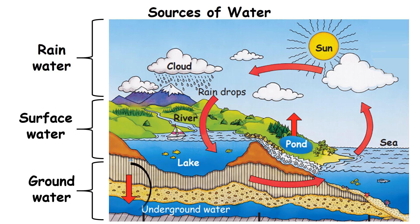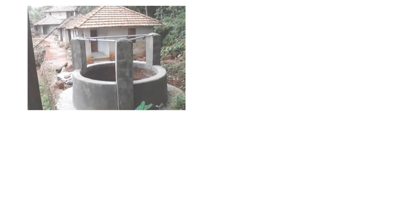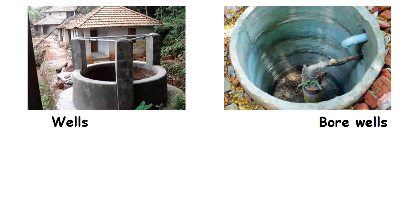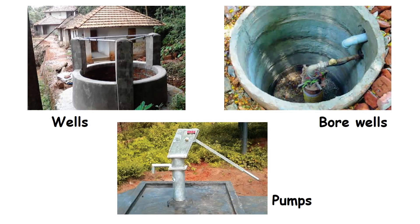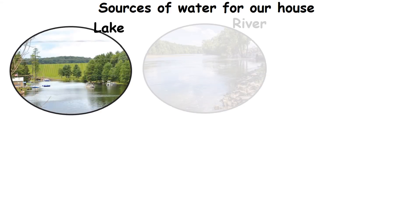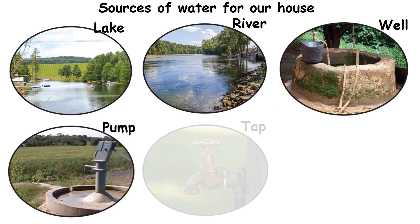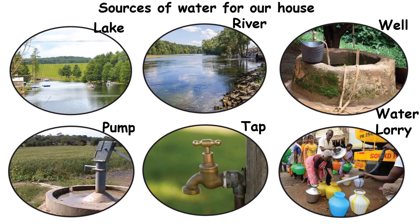Rain water seeps underground too. This is called ground water. People dig wells and bore wells to reach ground water. They also use pumps to lift it up from the ground. Some sources of water for our houses are lake, river, well, pumps, house tap and water lorry.